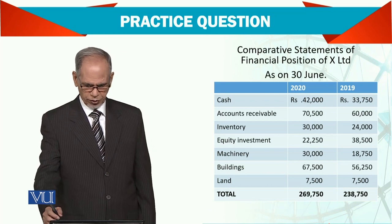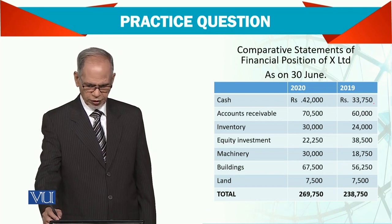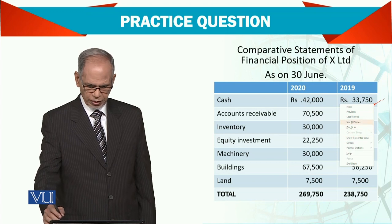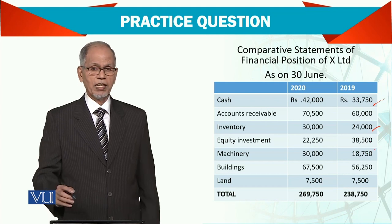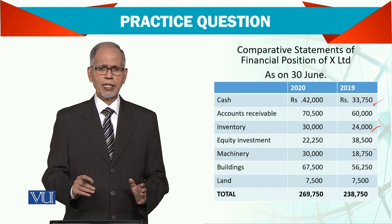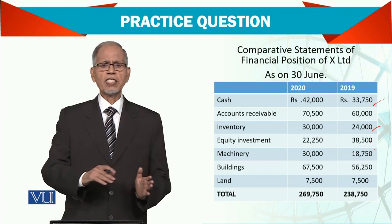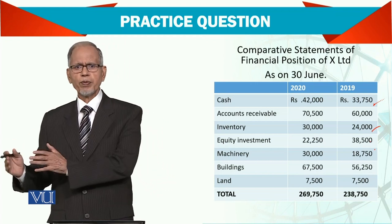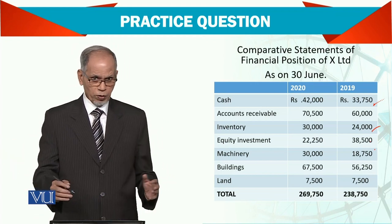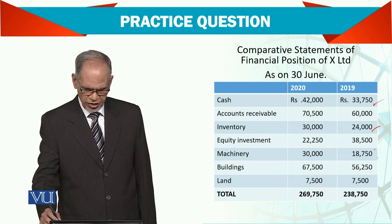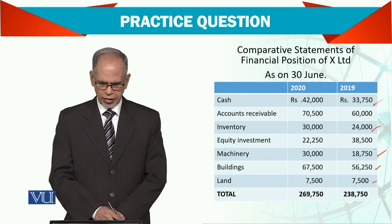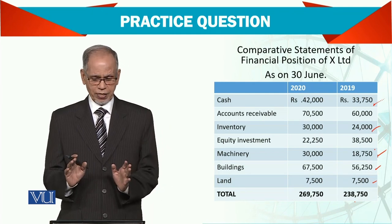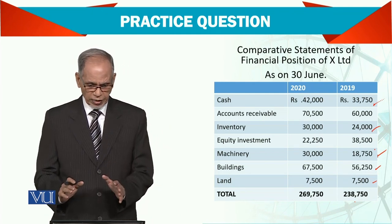Comparative financial position. Cash, opening balance, then accounts receivable, then inventory, then equity investment. This equity investment is basically that the company invested in some other company's shares — so it's not the company's own share. Machinery, building, land. So the balance — it's not a complete balance sheet. These are the asset side only.